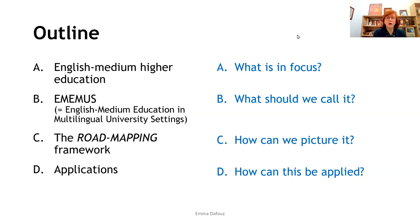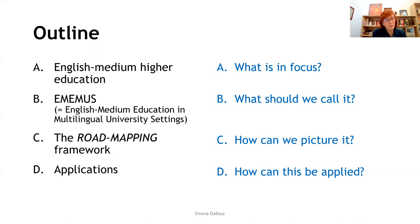The outline is organized in four points: first, English medium education — what is in focus here; then, what kind of label or term we should use; then, how can we picture and describe it through the road mapping framework; and finally, how to apply it through three major areas: describing particular settings such as countries or institutions — I'll talk mostly about Japan and a little about Vietnam — then my own setting at Complutense University, and then teacher professional development and teacher education.